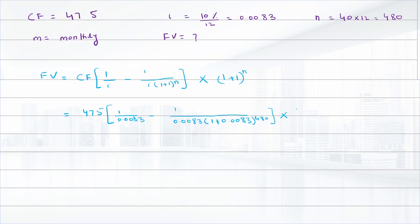1 plus 0.0083 into 1 plus 0.0083 raised to power 480. That is equal to 475 multiply by 120 minus 2.2346 multiply by 53.7006, that is equal to 475 multiply by 117.76 multiply by 53.7006.